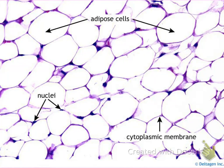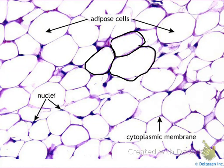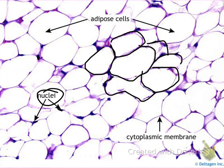Here is a picture of adipose tissue. Notice that the entire tissue is made up of individual compartments of adipocytes, and that each adipocyte is filled with fat droplets. The dark structures pushed off to the side are your nuclei, and the borders being outlined are the adipocyte membranes.